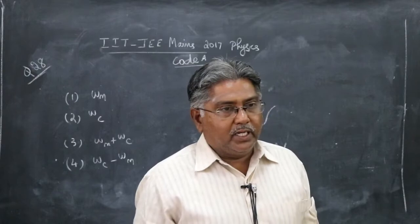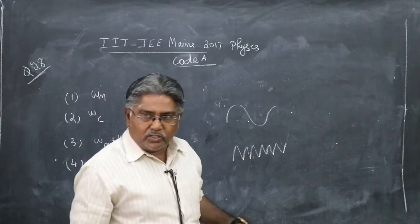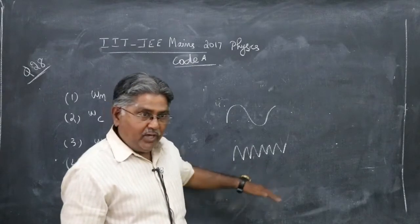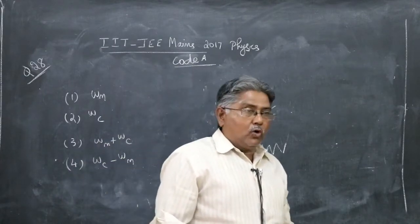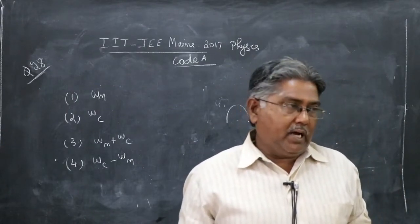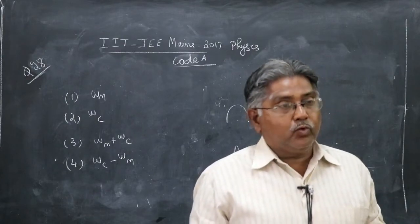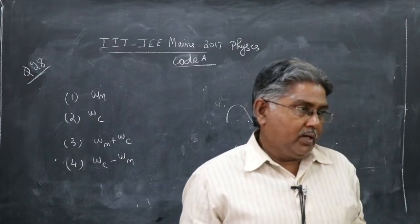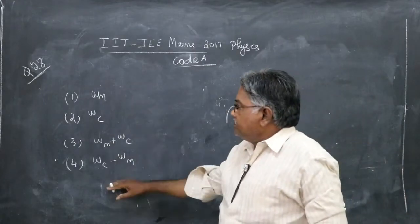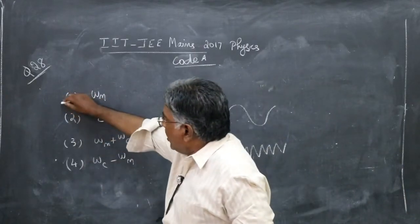How do you know that? There is mathematical proof. We will skip that here. We will not discuss that very big proof here. So three frequencies which will be present after this modulation, amplitude modulation: omega c, omega c plus omega m, omega c minus omega m. So out of this, omega m will not be there. So option one is correct.